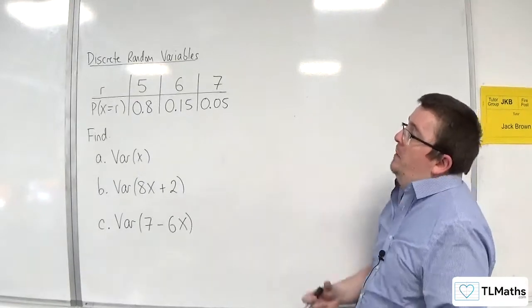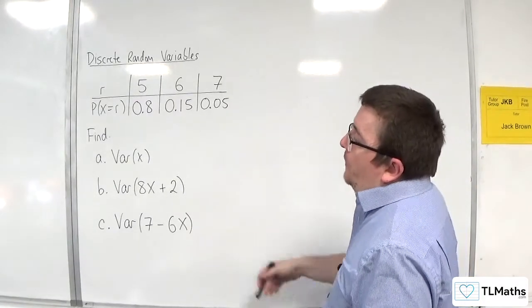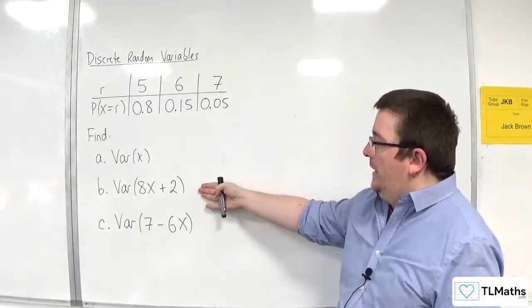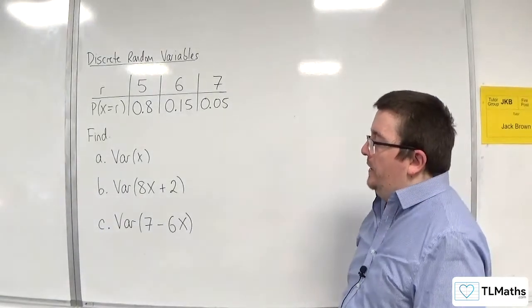In this video we have a discrete probability distribution, and what we need to find is var of x, var of 8x plus 2, and var of 7 take away 6x.